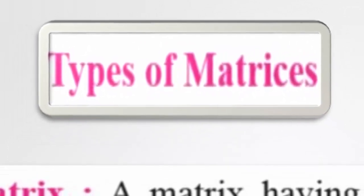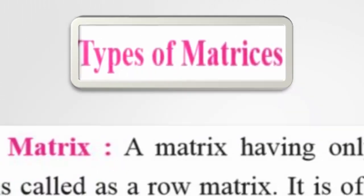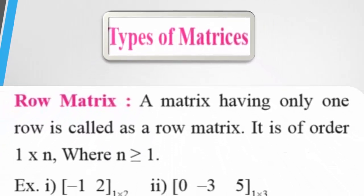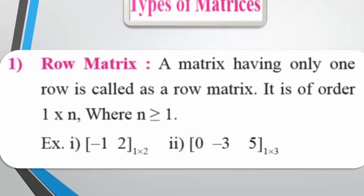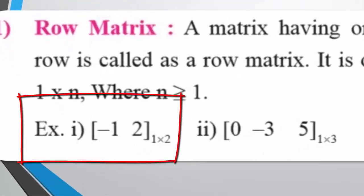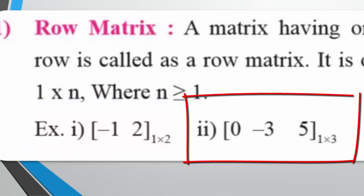Let us learn about different types of matrices. The first one is row matrix. A matrix having only one row is called a row matrix. It is of order 1 by N, where N is the number of columns and N is greater than or equal to 1. For example, the matrix [−1, 2] has order 1 by 2, and the matrix [0, −3, 5] has order 1 by 3, meaning one row and three columns.